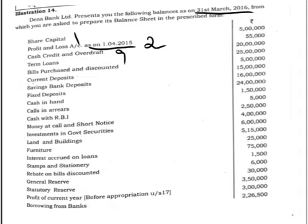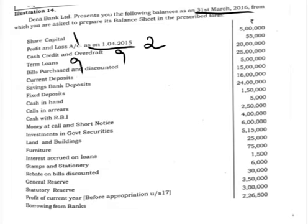Term loans — the bank has given term loans to customers — should also be shown in note number 9 under advances. Bills purchased and discounted — the bank has discounted customers' bills, a kind of advance — also shown in note number 9. So cash credit and overdraft, term loans, and bills purchased and discounted all appear in note number 9. Current deposits, savings bank deposits, and fixed deposits all appear in note number 3 under deposits.